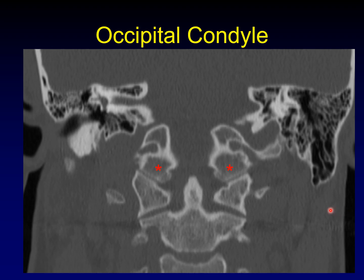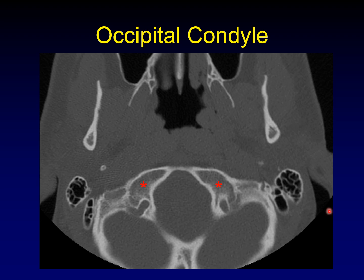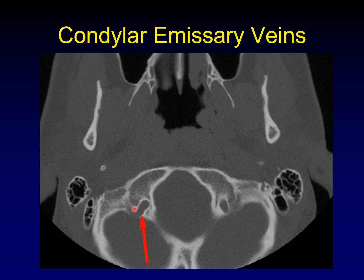Now the occipital condyles — we've gotten to the back of the skull base. The occipital condyles are the portion of the skull base that articulate with the cervical spine, specifically the articulation points between the first cervical vertebra and the skull base. Here they are in the axial plane — elongated ovals connecting in the center. You'll frequently see veins running through the region of the posterior skull base; they're variable. When you see them around the occipital condyle, these are called condylar emissary veins, and almost everybody has some form of condylar emissary veins, whether posterior, lateral, or anterior.